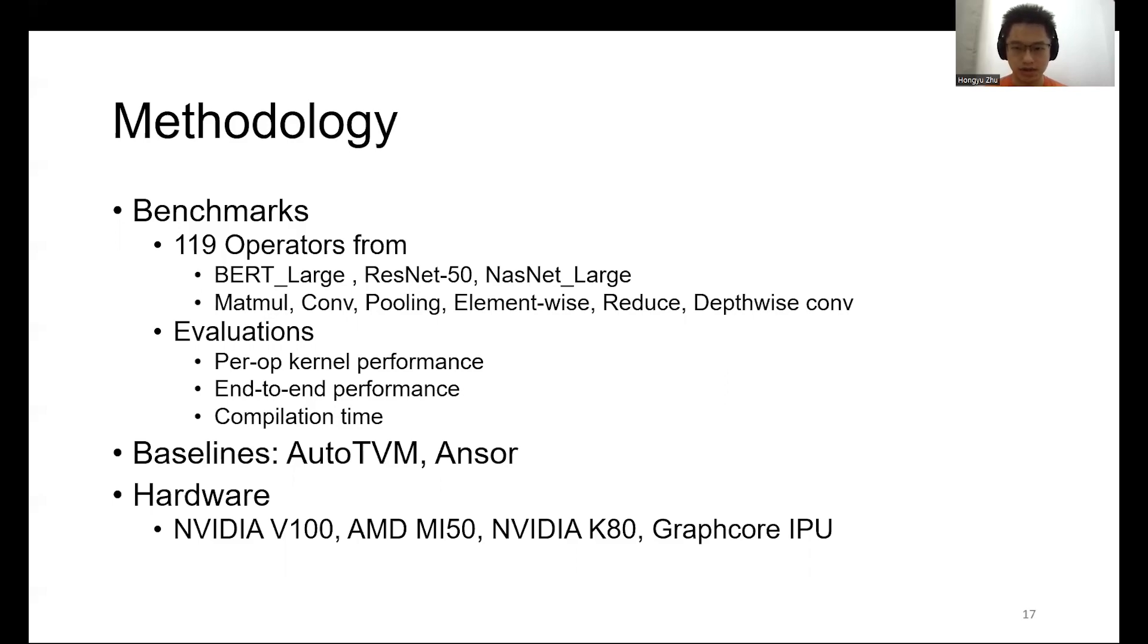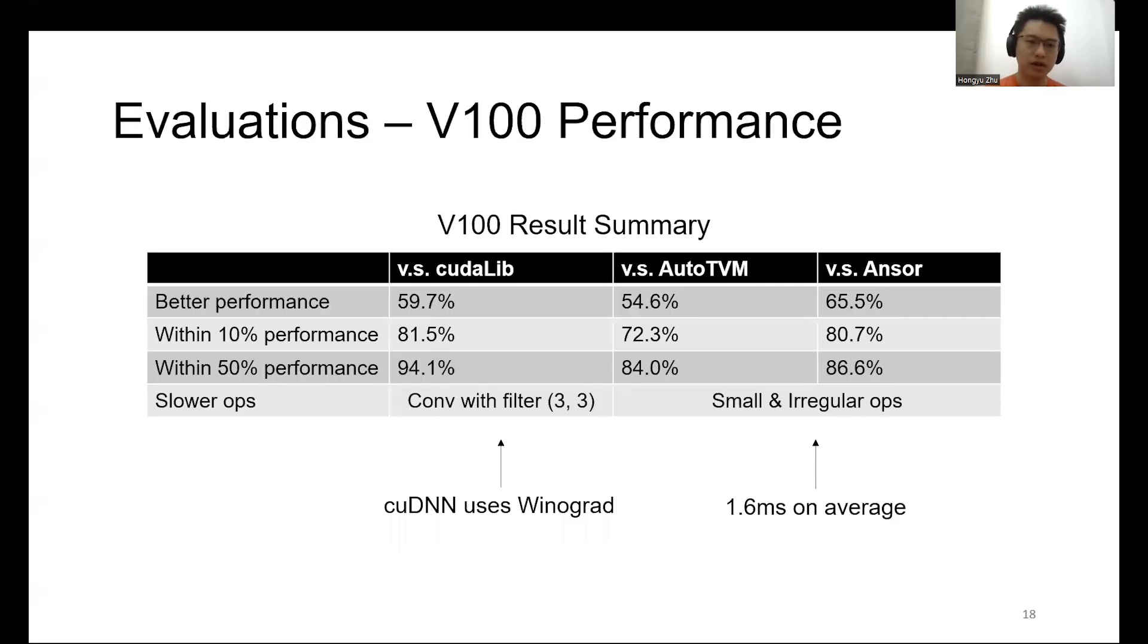For the last part of this presentation, I will show the evaluation of Roller. Our benchmarks come from the BERT-Large, ResNet-50, and NASNet-Large models. We summarized 119 operators covering six different DNN operators. We evaluated both the operator performance and the compilation time. We evaluated all the systems on V100 and MI50 GPU, K80 GPU, and the Graphcore IPU.